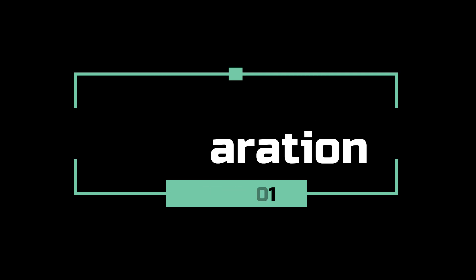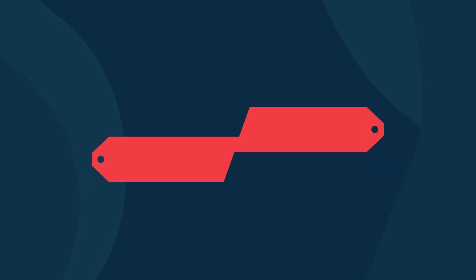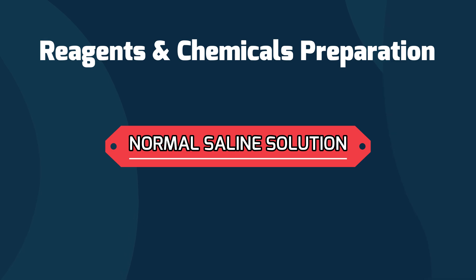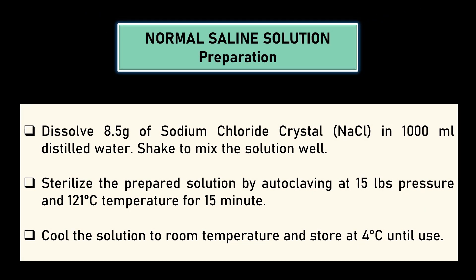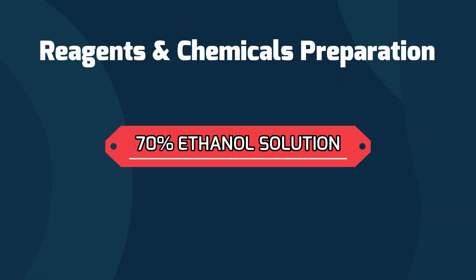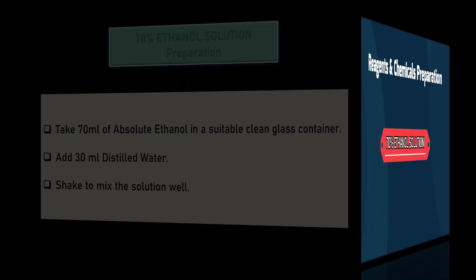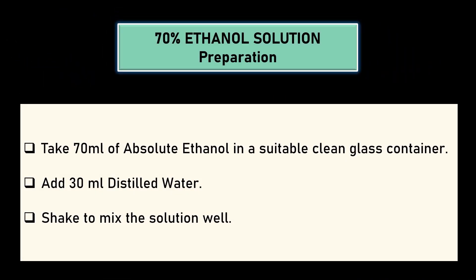First, we will learn about the reagent preparation necessary for this procedure. We can prepare normal saline solution by dissolving 8.5 g of sodium chloride crystal in 1000 ml distilled water. Sterilize the prepared solution by autoclaving at 121°C and 15 pounds pressure for 15 minutes, then cool to room temperature and store at 4°C until use. We can prepare 70% ethanol solution by mixing 70 ml absolute ethanol with 30 ml distilled water.